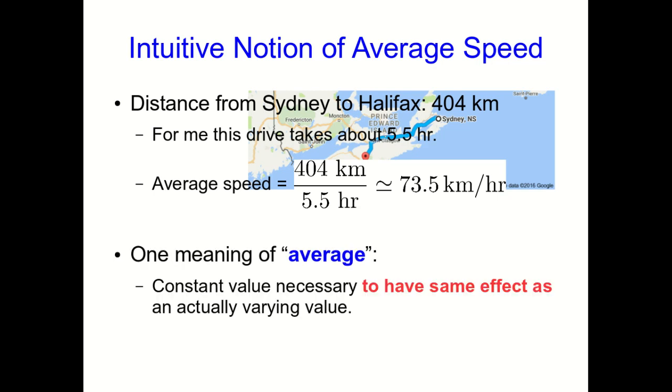And aside from just thinking about speed, this also gives us a way of thinking about what average means. It's the constant value that would have the same effect as an actual varying value. The speed I was actually going was varying, but if I had gone at a constant 73.5 kilometers per hour, it would have had the same effect. I would have got from Sydney to Halifax in the same amount of time, assuming the police didn't pull me over.